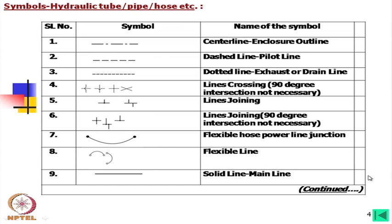Now we will go to much simpler symbols which may not be strictly ISO standard but are used in industries. First, we shall consider symbols for hydraulic tubes, pipes, holes, etc. This is the center line used in a system. The dashed line is the pilot line. The top line shown is used as an enclosure outline.